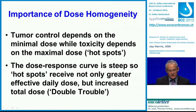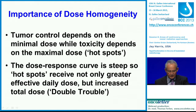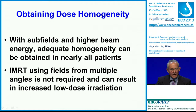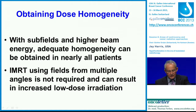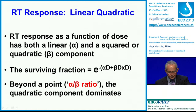The dose response curve is actually quite steep, so that these hot spots not only receive greater effective daily dose, but also increased total dose. That combination is referred to as double trouble. It is now possible to obtain high levels of dose homogeneity by modulating the radiation beam with subfields and higher energy. Adequate homogeneity can be obtained in nearly all patients. True IMRT, where you use fields from multiple angles, is not required and, in my judgment, is not indicated because of the increased low-dose irradiation.